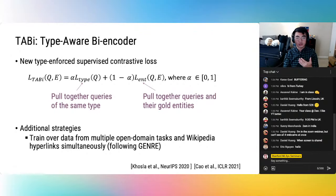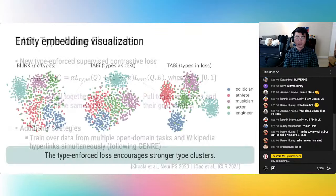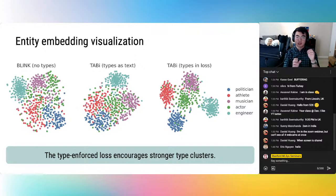Tabby's loss is a weighted combination of two supervised contrastive terms. The first term pulls together queries of the same type, while the second term pulls together queries and their gold entities. We also train over data from multiple open domain tasks and Wikipedia hyperlinks simultaneously, which helps with tail retrieval. Tabby achieves the best type clustering when we include types in the contrastive loss — compared to the other two options, Tabby's embedding space is much more clearly organized by type.